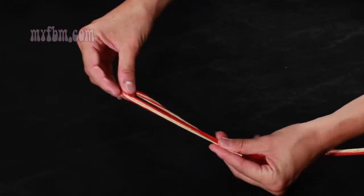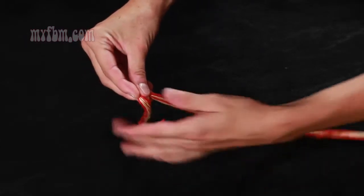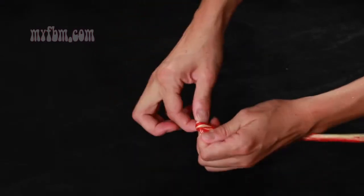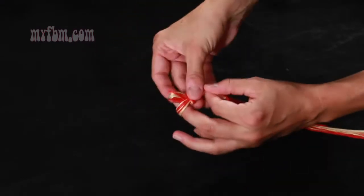You want to fold probably anywhere between two to three inches. Make your loop. You're going to tie a knot approximately a half inch from the top of your loop.